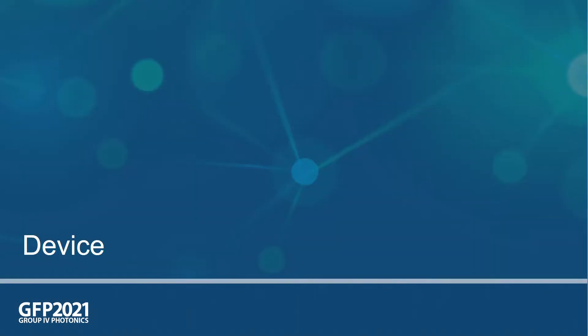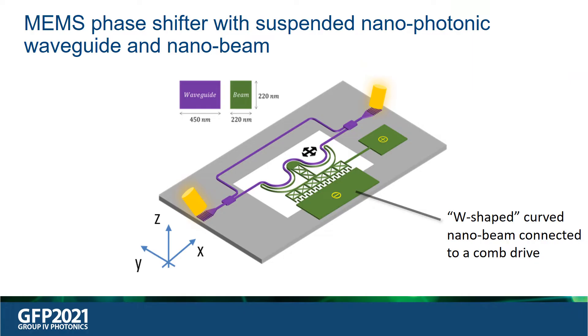In this work, we perform such thermomechanical noise measurement for our silicon photonics MEMS device, which is a MEMS phase shifter fabricated on IMEC's ISIPP50G active silicon photonics platform. It is a Mach-Zehnder where one of the arms contains a W-shaped curved nanophotonic waveguide of width 450 nm and thickness 220 nm as shown in the schematic.